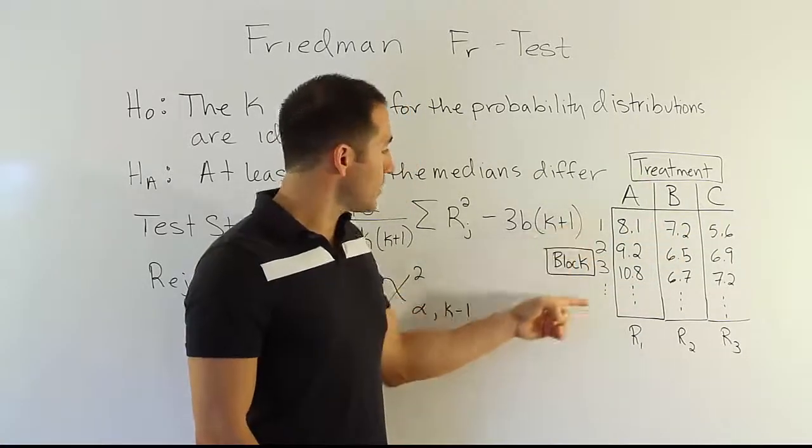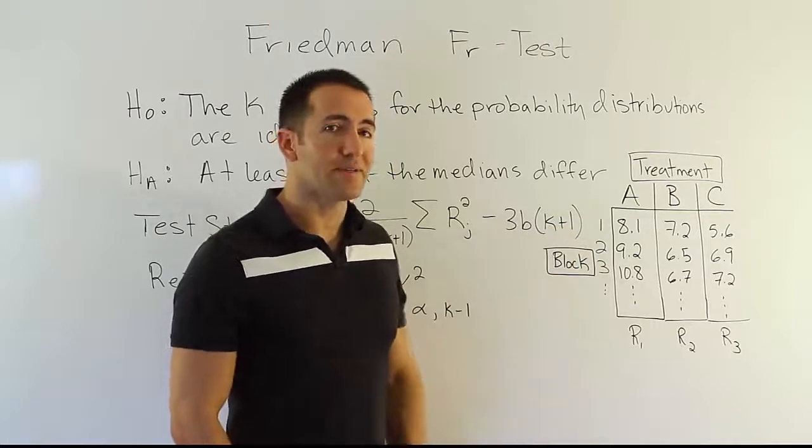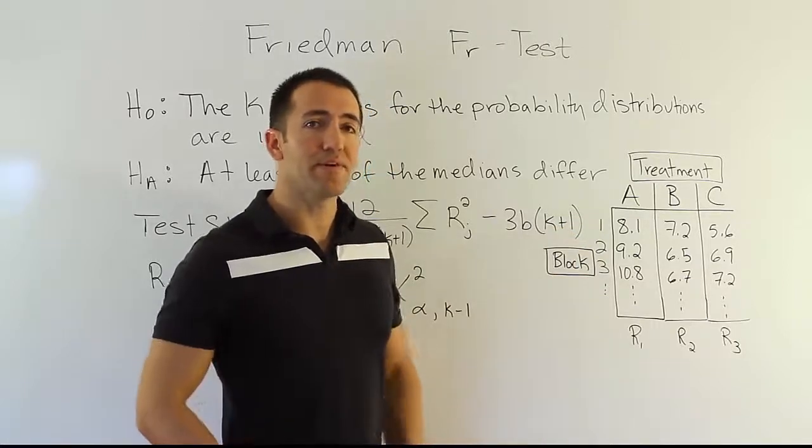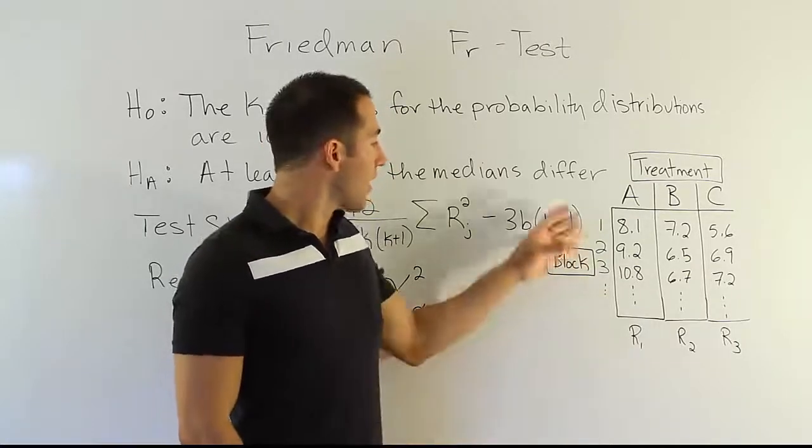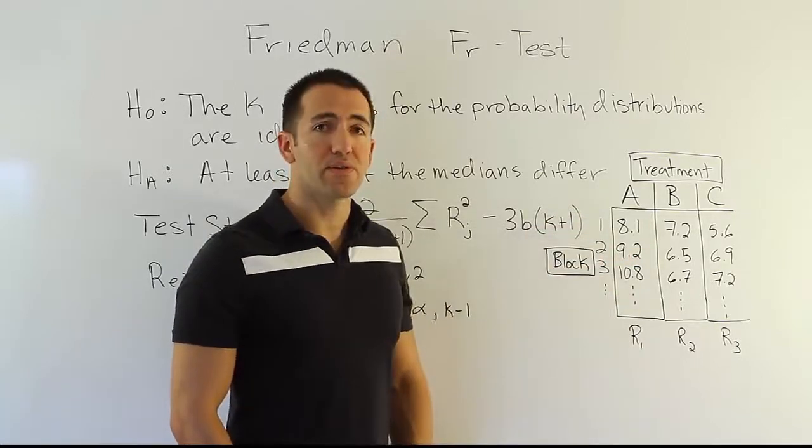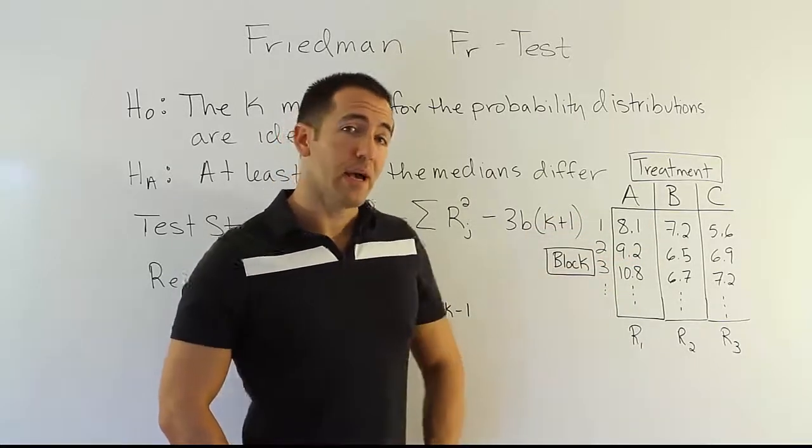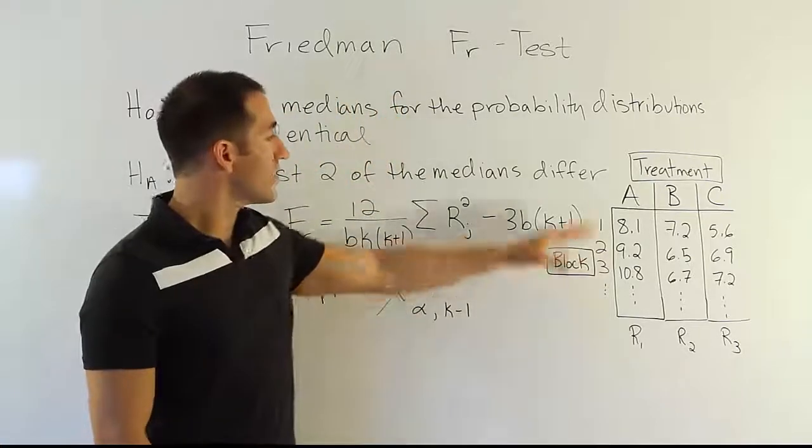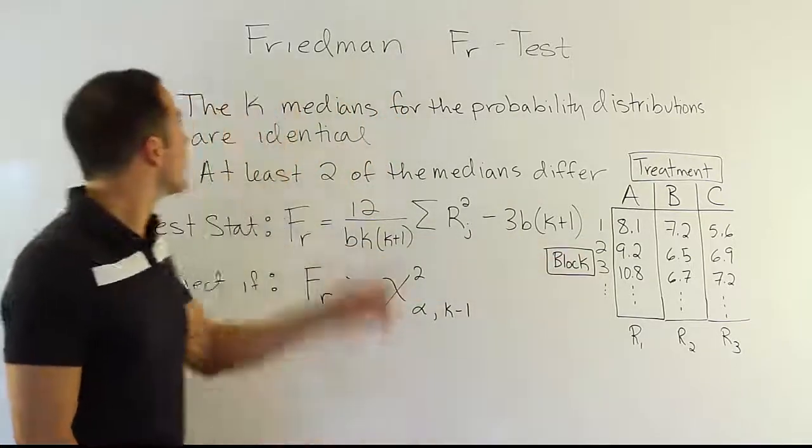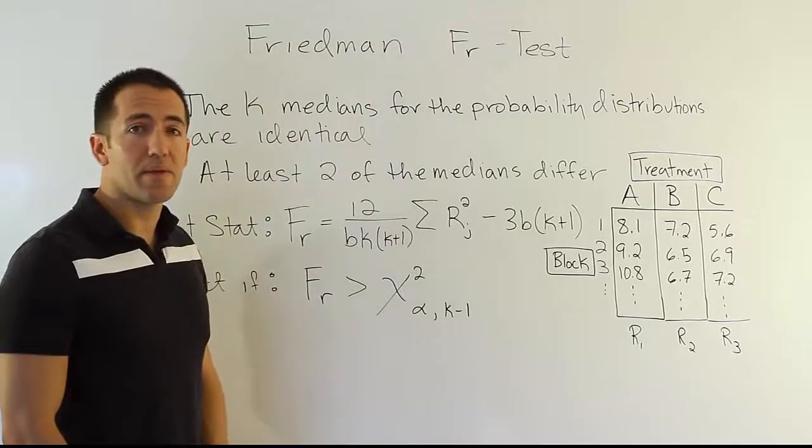So each individual may have different reaction times naturally because different people have different reflexes. So we want to block out those differences. So this is a classic case where you'd want to use the randomized block design approach. However, if you can't assume normality underneath the data, you might choose the Friedman FR test as a nonparametric option.